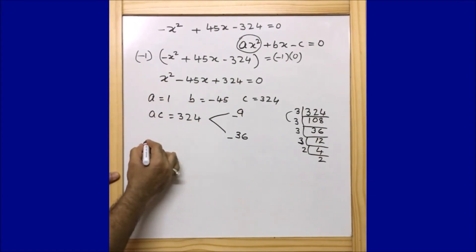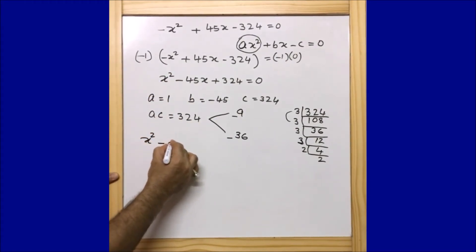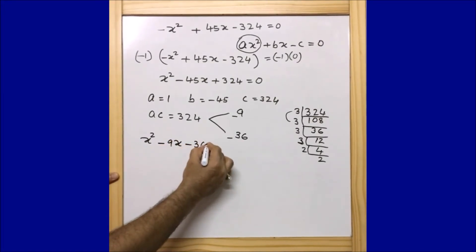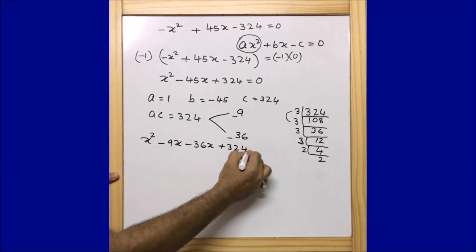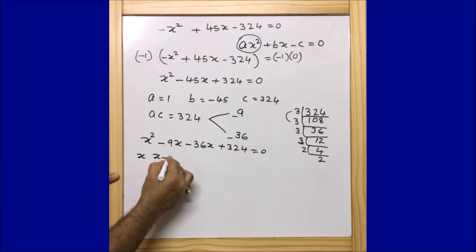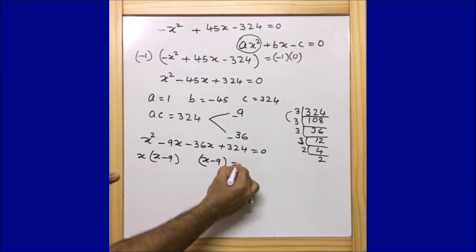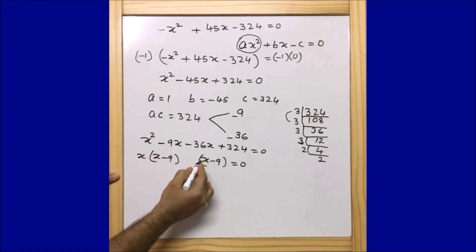Now I can rewrite the equation as: x squared minus 9x minus 36x plus 324 equals 0. Taking x as common from the first two terms, I get x(x minus 9), and from the last two terms I also get a factor of (x minus 9).